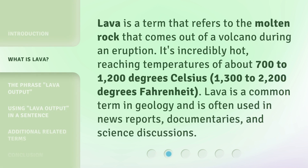Lava is a term that refers to the molten rock that comes out of a volcano during an eruption. It's incredibly hot, reaching temperatures of about 700 to 1,200 degrees Celsius, or 1,300 to 2,200 degrees Fahrenheit. Lava is a common term in geology and is often used in news reports, documentaries, and science discussions.